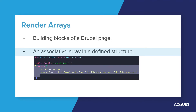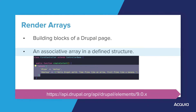With forms, beyond using the #markup element, you could instead use one of the form elements available from the form render elements. These could include checkboxes, select lists, text fields, buttons, and many other elements. You can find the full list of elements at the link provided here and the resources at the end of this video. I encourage you to pause the video now to explore the scope of form elements available.